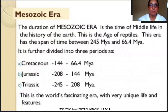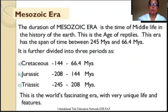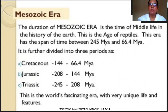The fourth era is also known as the Mesozoic Era. It is also known as the age of reptiles. The duration of Mesozoic Era is the time of middle life in the history of the Earth. This era has the span of time between 245 million years ago to 66.4 million years ago. It is further divided into three periods: Triassic, Jurassic, and Cretaceous. This is the world's most fascinating era with very unique life and features.